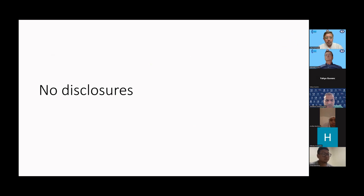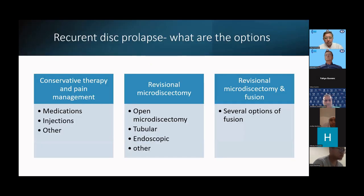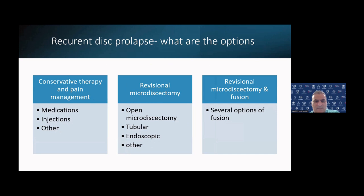I have no disclosures for this. I'll dive straight in because some of the talks will cover some of the basic concepts. So what are the options? If we have someone with recurrent disc herniation after already one operation, we can of course follow a conservative plan, offer pain management with medications, physiotherapy, injections and so on. Another option is to consider a revisional surgery and a common option is a revisional microdiscectomy.